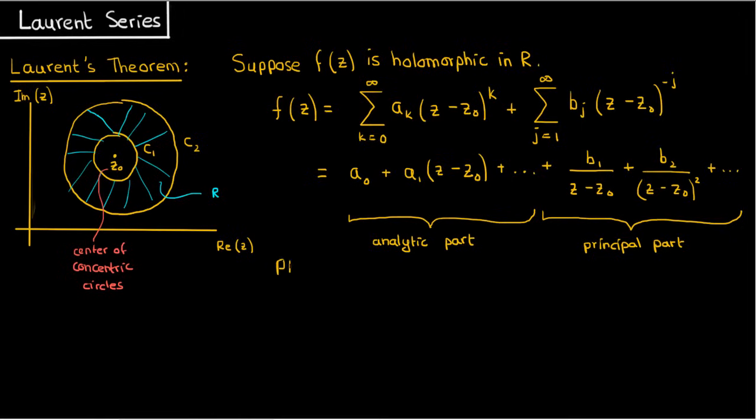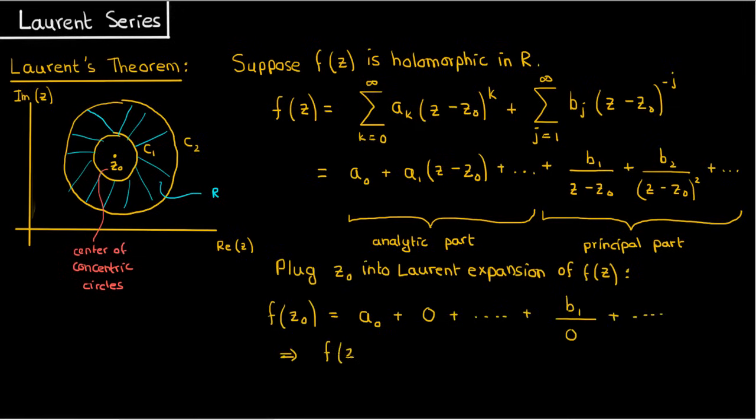This principal part is significant because it allows Laurent series to do something Taylor series can't, because if I plug z0 into my equation for f, then provided that all these b coefficients aren't zero, my f, because of the z minus z0 in the denominator, will be undefined at z equals z0.